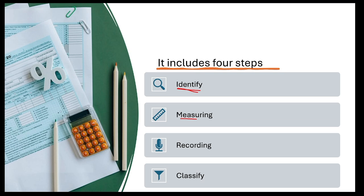Second step is measuring the transaction — us transaction ko measure karna in terms of money. Then recording — it should be recorded in general or business ke subsidiary book me. Then we classify it — same nature ke transactions ko haam classify karte hain, ledger ke andar post karke.